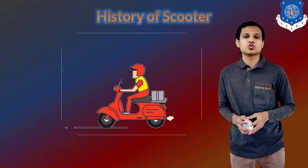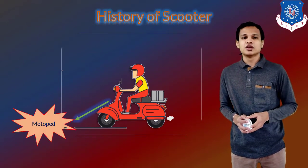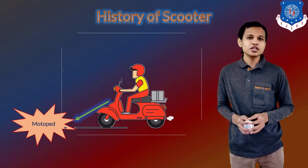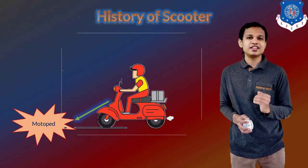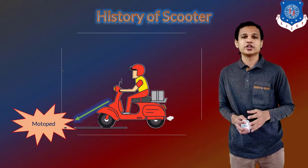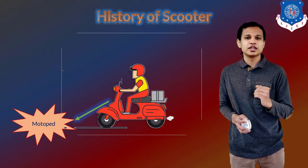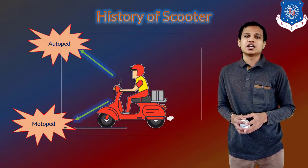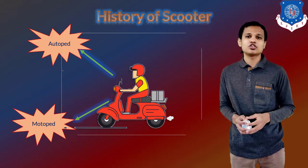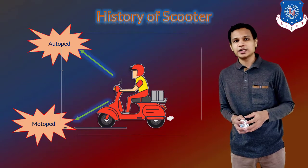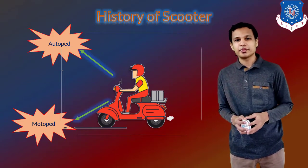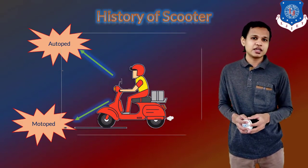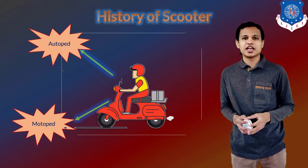Next we will see about the history of the scooter. The first thing was the motor bed, which was running like a simple scooter that you can run with the force of your foot — you just stand on it and by giving force with the second foot, you can run it. After the motor bed, the auto bed was used. To run the auto bed, a motor was given, but to start it, you just needed to provide the first force by foot. So it was essentially a mechanical vehicle started by foot force.